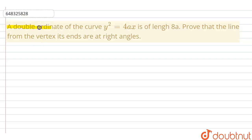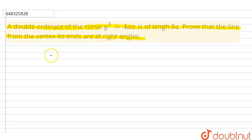A double ordinate of the curve y² = 4ax is of length 8a. Prove that the lines from the vertex to its ends are at right angles. Let's solve the question. Cord AB is a double ordinate.